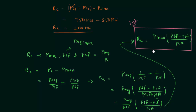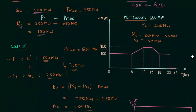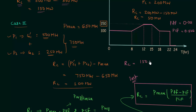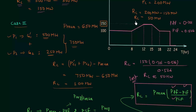Now let us find out reserve capacity using this result. In the above case we already calculated PLF and PCF: PLF was equal to 0.701 and PCF was equal to 0.526. We already know Pmax is 150 MW. So the reserve capacity is equal to 150 MW times (0.701 − 0.526) / 0.526, which gives reserve capacity as approximately 50 MW — the same result we obtained by subtracting Pmax from the installed capacity.